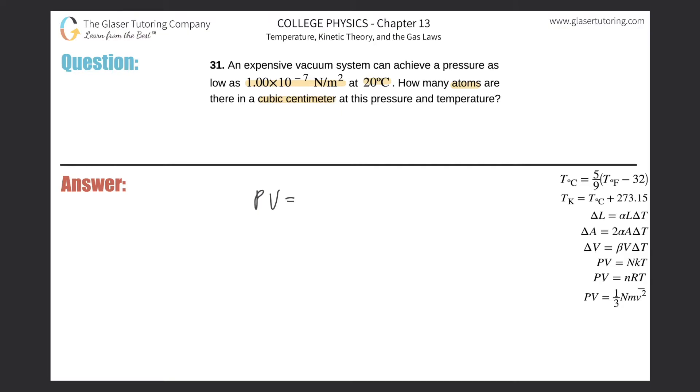In this problem, we're going to be using this form, PV equals capital N times K times T, alright? I have a general video on ideal gas law linked in the description below. Check that out where I talk about how to use this formula and what everything means.